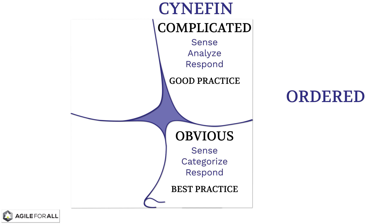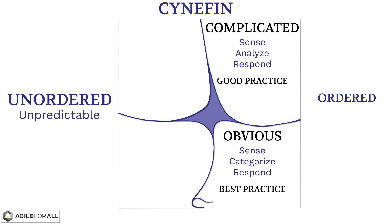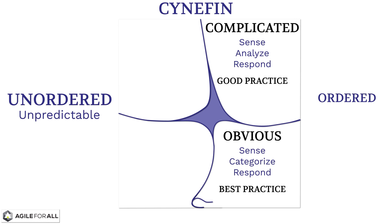The left side describes systems that are currently in an unordered state, meaning cause and effect are inherently unpredictable. At the top left, we have a system where cause and effect are only clear in hindsight — they cannot be predicted ahead of time.